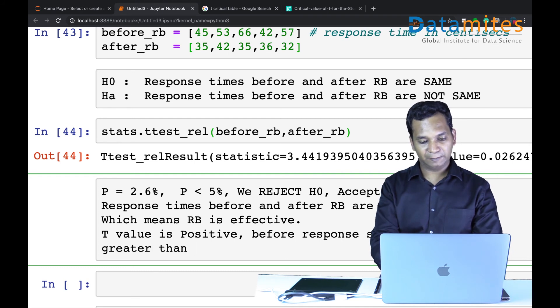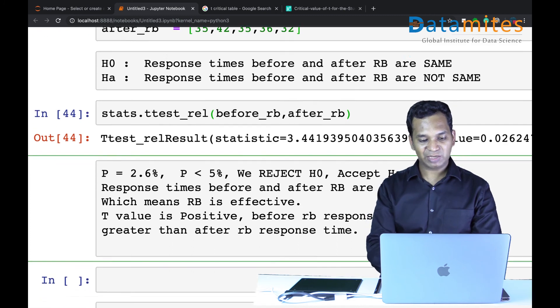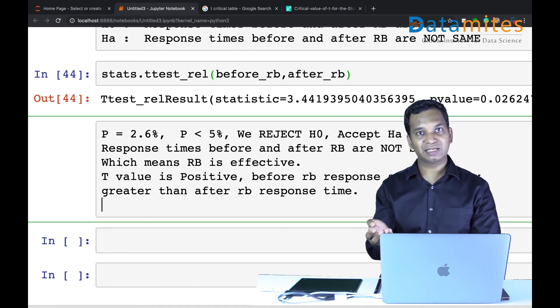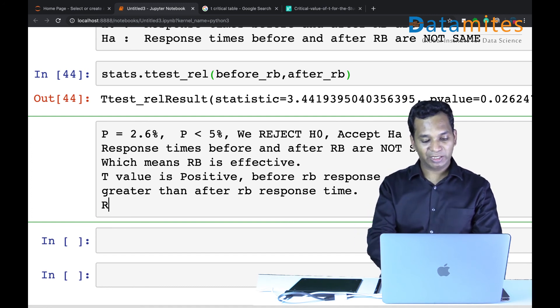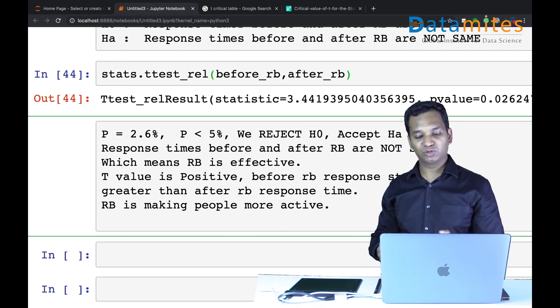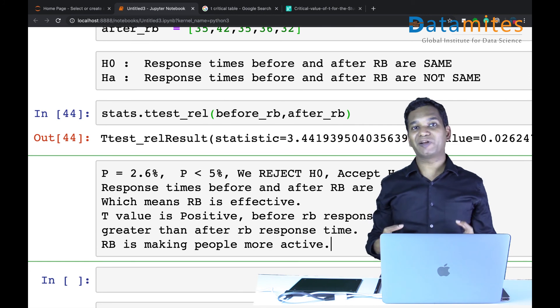T-value is positive, which means before response time is statistically greater than after Red Bull response time. If the response time is more it means slower, so before is more than after, which means after is less, which means Red Bull is making people more active. That concludes your research and helps Red Bull sell more because you've statistically proven Red Bull makes people more active.